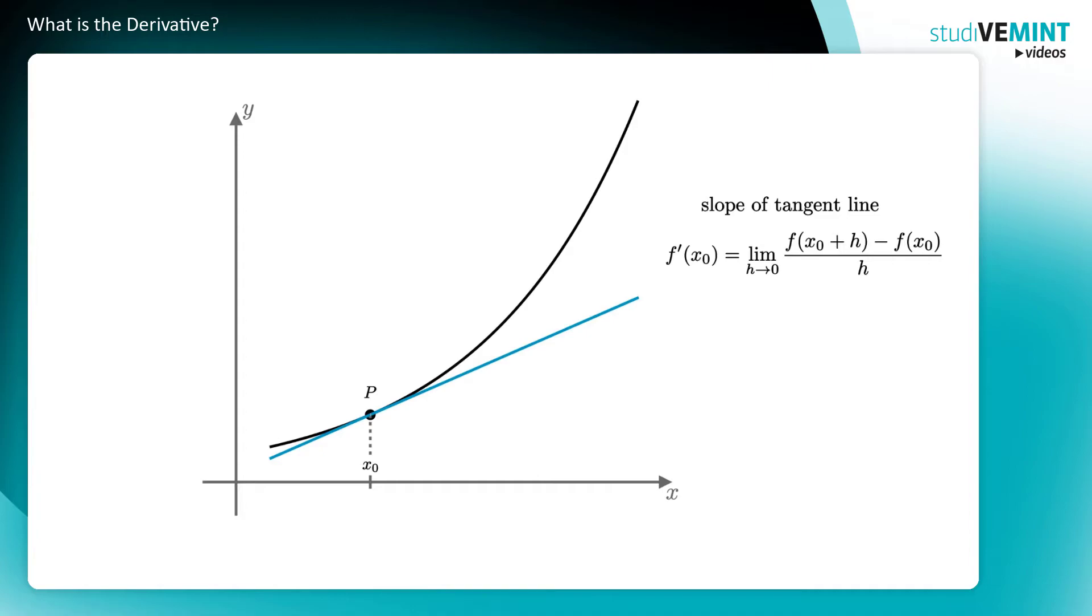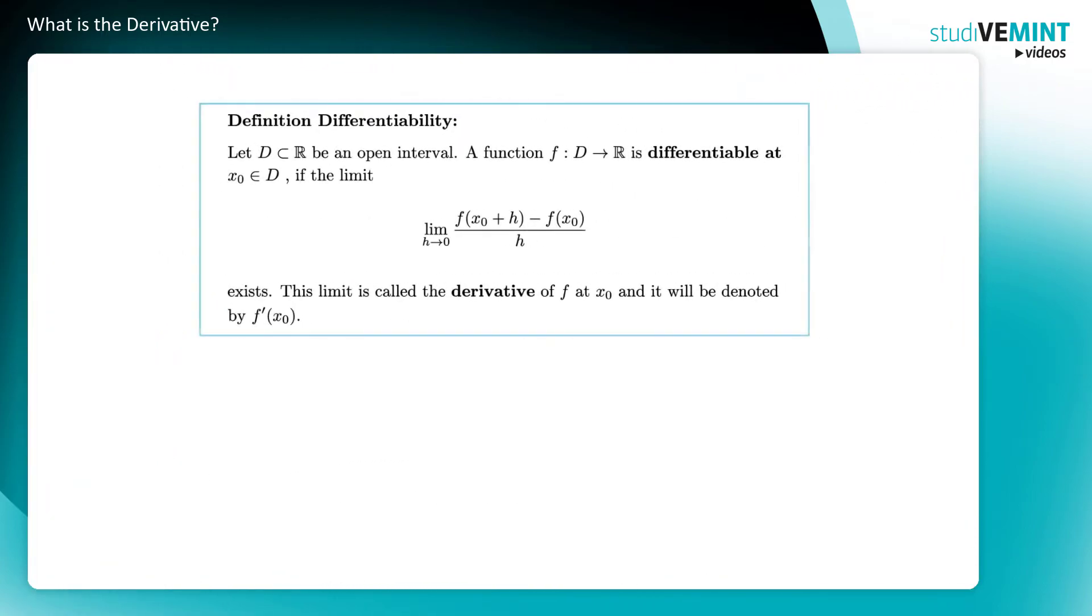You have seen now the geometrical intuition that leads to the definition of the derivative. You can find these ideas in the definition. You have an open interval d and a function f defined on d. The function f is differentiable in a point x₀ if the limit of this quotient exists as h tends to zero, that is, if the limit is a real number. In this quotient, you can recognize the slope of the secant line. It is also called the difference quotient. Geometrically speaking, the limit process yields the slope of the tangent line, and thus the slope of the function f at the point x₀, which is the value of the derivative of f, f'(x₀).